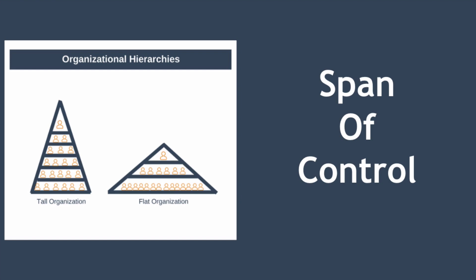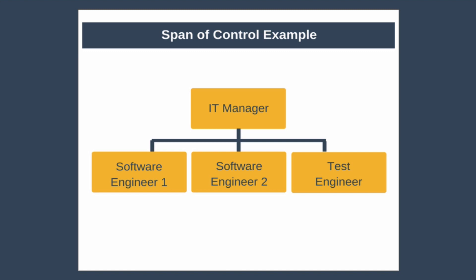Hello and welcome to the channel where today we're explaining span of control. Span of control is very simply the number of subordinates that report to a manager. So in the example here, we could say that the IT manager has a span of control of three, as they have three subordinates reporting to them.